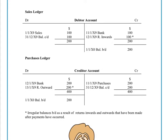Today we're going to look at why sometimes in the control accounts we get irregular or unusual balances brought down — in other words, they seem to be or they are on the incorrect side. It's very important to note that we did cover total debtors and total creditors control accounts in a previous video, and it's very important you watch that first before you watch this or you're just going to be thoroughly confused.